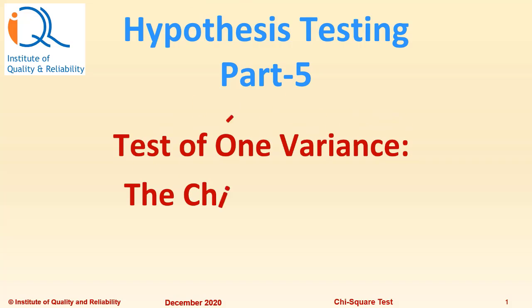Hypothesis Testing Part 5 – Test of One Variance – The Chi-Square Test.